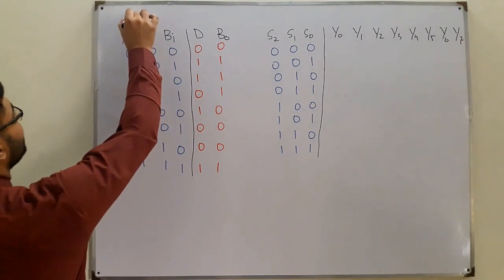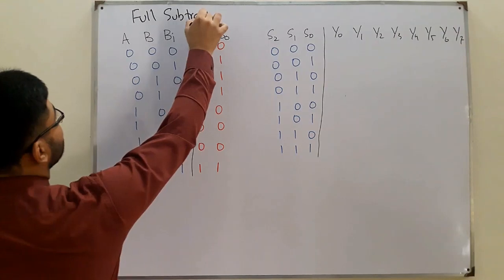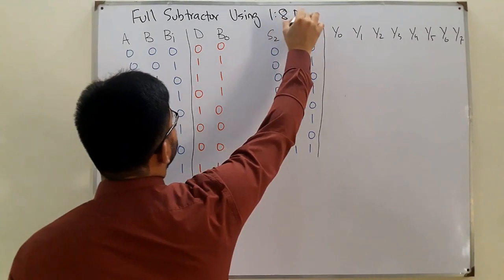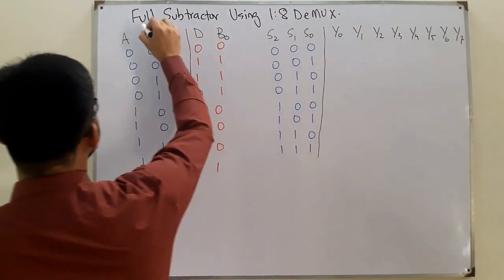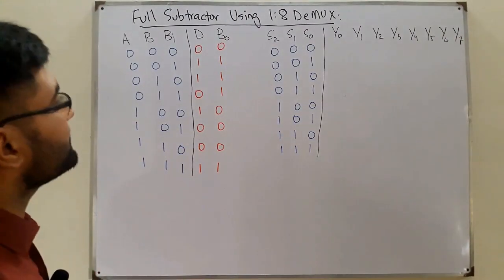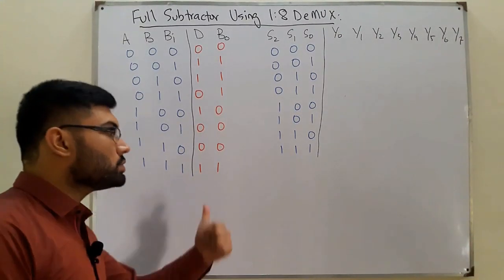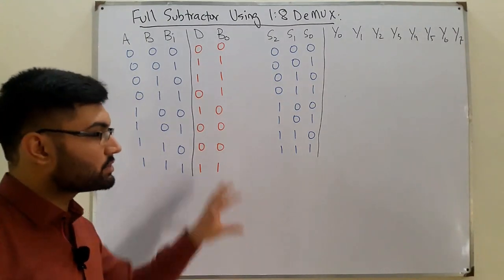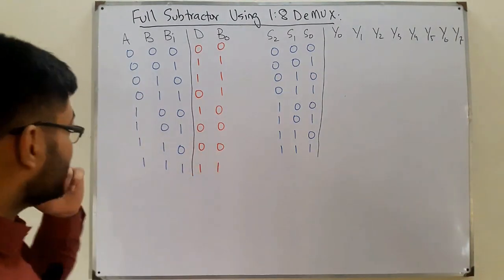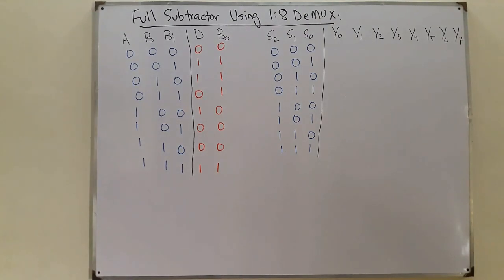Today our topic is to design a full subtractor using a 1×8 D multiplexer. This will also cover the 1×8 D multiplexer. We will not be drawing the inside circuitry — you already have an idea from the 1×2 and 1×4 D multiplexer. We will be focusing on understanding the full subtractor.